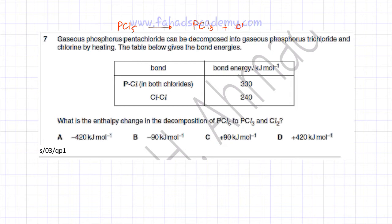Chlorine is Cl2. This is the reaction happening and the table gives the bond energies of the following bonds. The question asks: what is the enthalpy change in the decomposition of PCl5 to PCl3 and Cl2?